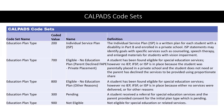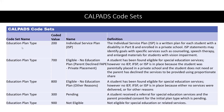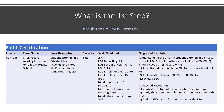You can refer to the CALPADS code set when you look at the error list and don't understand a specific code. The error list says students should have an active plan 200, so we go to the code set, look at education plan type code 200, and we can see that's an Individual Service Plan — a written plan for each student with a disability under Part B enrolled in a private school. ISP statements may identify goals, and so on. That's specifically for private schools. What are 300, 700, 800, and 900?